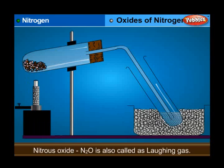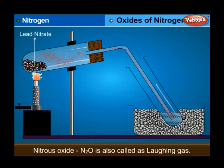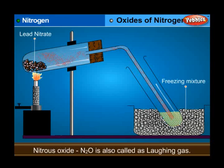Preparation of nitrogen dioxide — laboratory method: Lead nitrate is heated gently as shown in the figure. It decomposes with a crackling noise and a reddish-brown gas is evolved. These vapours are collected in a receiver placed in a freezing mixture, and a yellow liquid of N2O4 is obtained.